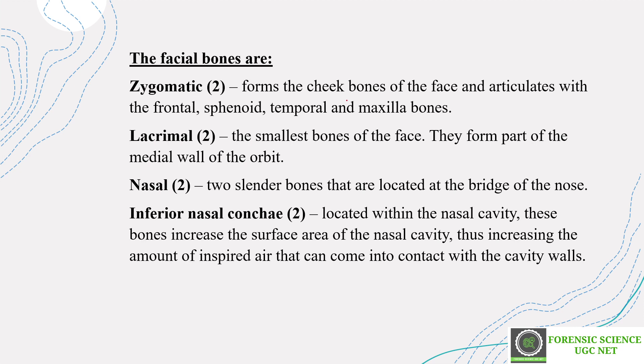First, we have the zygomatic bones — your cheek bones. We have two zygomatic bones, and they articulate with the frontal bone, sphenoid bone, temporal bone, and maxilla. Maxilla is your upper jaw; mandible is your lower jaw. Next are the lacrimal bones — again paired, two in number. These are the smallest bones of the face and they form part of the medial wall of the orbit.